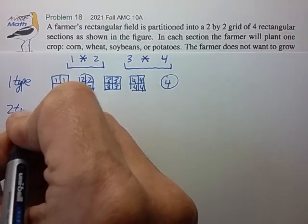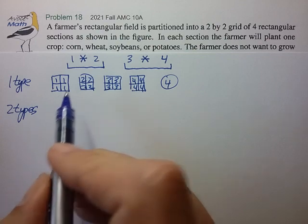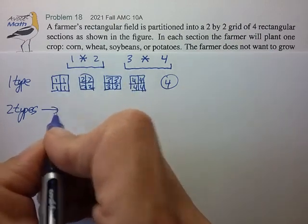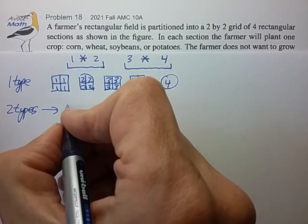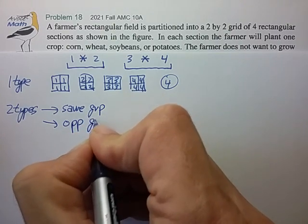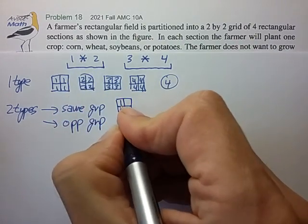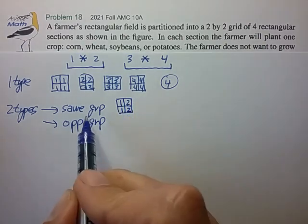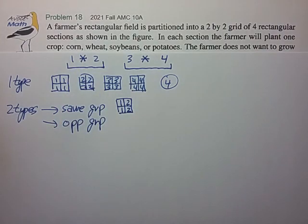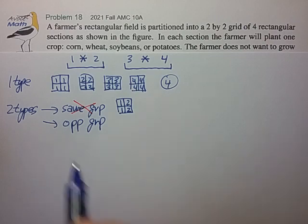If we have two types of crops, then just for argument's sake, what if we choose, say, one and two, or perhaps one and three. So it seems like we have two options. We could choose the two crops being from the same group or the opposite group. So if we're in the same group, I would choose, say, one and two and have something like this. And it seems as though no matter how I arrange one and two, I'm going to violate the condition of not being next to one another. So I don't think it can actually pick two crops from the same group.